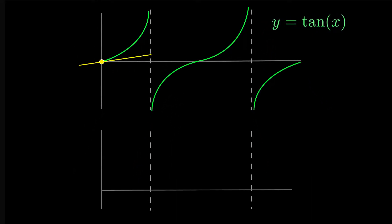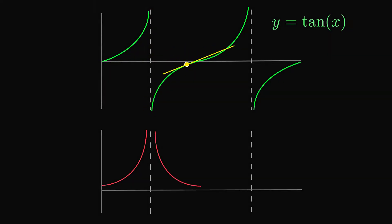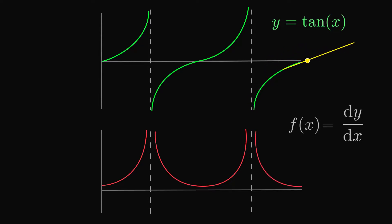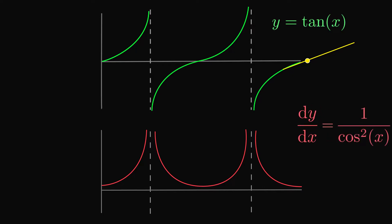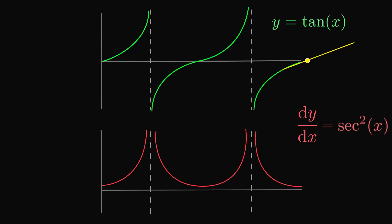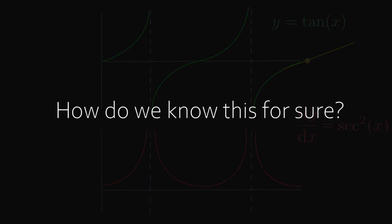Now let's plot the values of the gradient of tan x like we did before. We end up with a seemingly unfamiliar graph, but after some testing we see that this is a graph of 1 over cosine squared of x, which is more commonly written as secant squared of x. So the derivative of tan x is secant squared of x — but how do we properly know this?